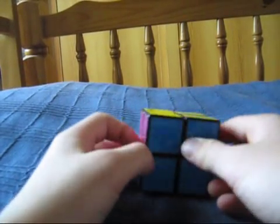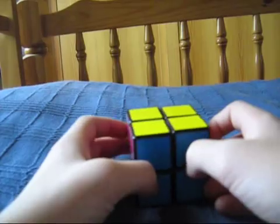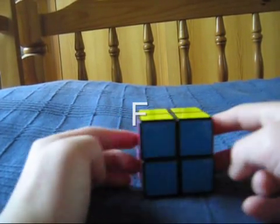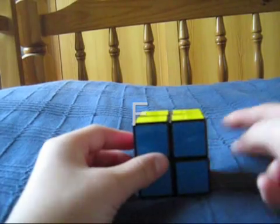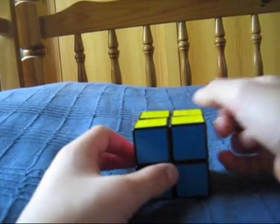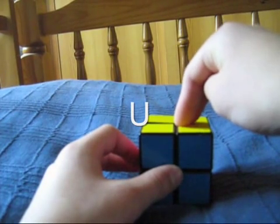First of all the move notation, which is basically the same as with a 3x3. This side is called the front side, which will be denoted by an F. This side is called the back side, which will be denoted by a B. This side is called the upside, which will be denoted by a U.